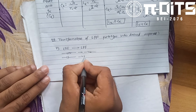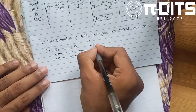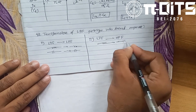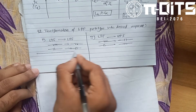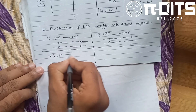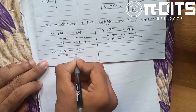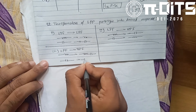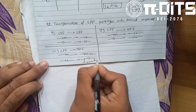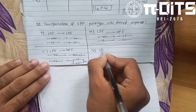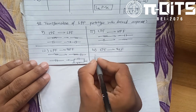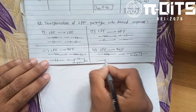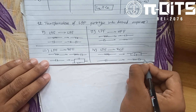For a high-pass filter, the low-pass prototype capacitor converts to an inductor in the high-pass filter. The band-pass filter converts: an inductor becomes an inductor in series with a capacitor, and a capacitor becomes a capacitor in series with an inductor. For a band-stop filter, inductors and capacitors are transformed accordingly, with series and parallel combinations used.